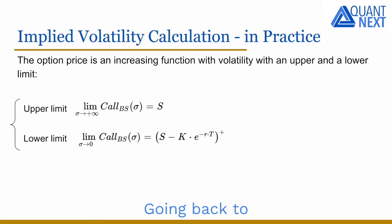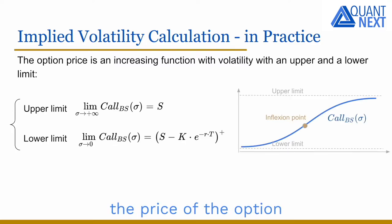Going back to our Black-Scholes model, the option price is an increasing function with volatility with an upper and a lower limit. Here is an illustration of the price of the option as a function of volatility.